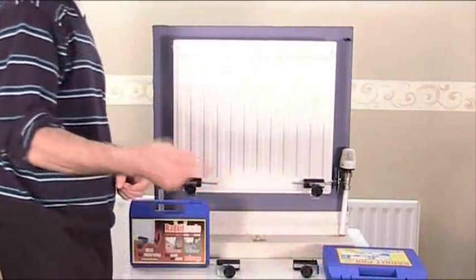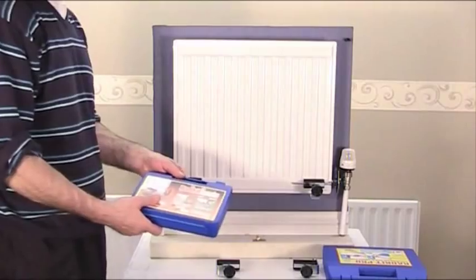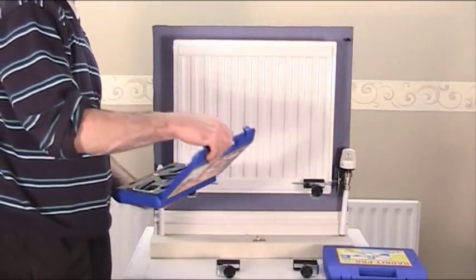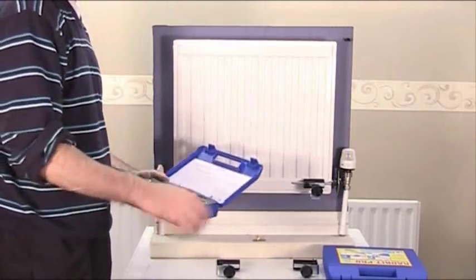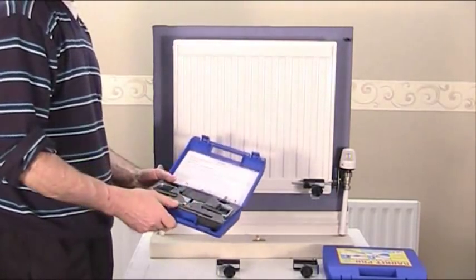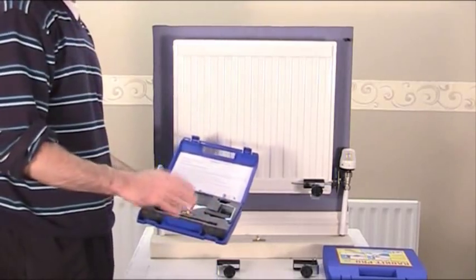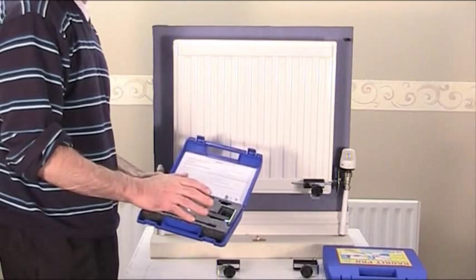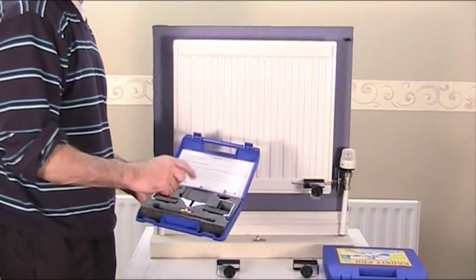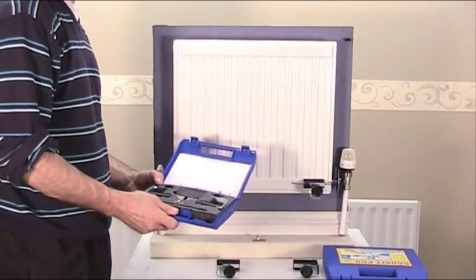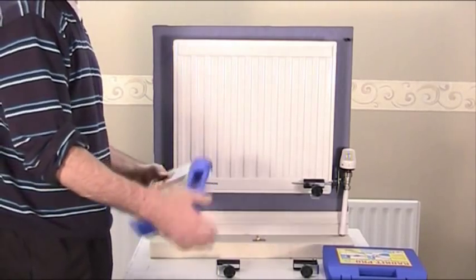Now the next stage down from that is the Radkit Basic which again is in a nice carry case. You get instructions in this as well, same quick set of instructions in the back on the lid. What you're getting here is all of the previous except you don't get the rad wrench and the rad spanner. That's the only difference. You get everything else: the two forks, two clamps, two guide rods, and a spare set of seals. So that's the Radkit Basic.